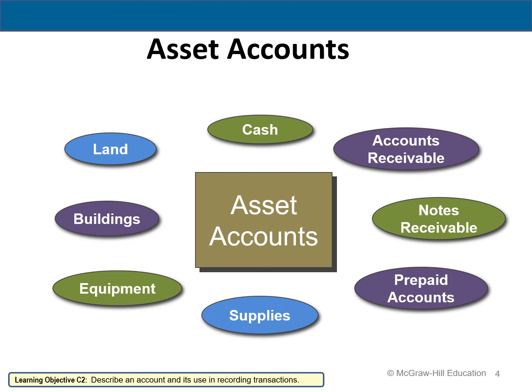We need to understand what assets are. Assets are anything the company owns or controls. The most basic asset is cash — companies don't exist for very long without it. The order in which I'm discussing these is the order in which you typically see them on the balance sheet. So cash would be listed first.